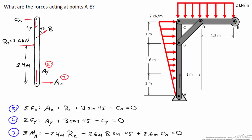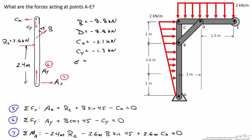Solving the system yields: B equals negative 8.8 kilonewtons, indicating member BD is under compression. B and D are equivalent. CX equals negative 2.1 kilonewtons, CY equals negative 1.3 kilonewtons, E equals positive 4.1 kilonewtons, AX equals 0.54 kilonewtons, and AY equals 5 kilonewtons.